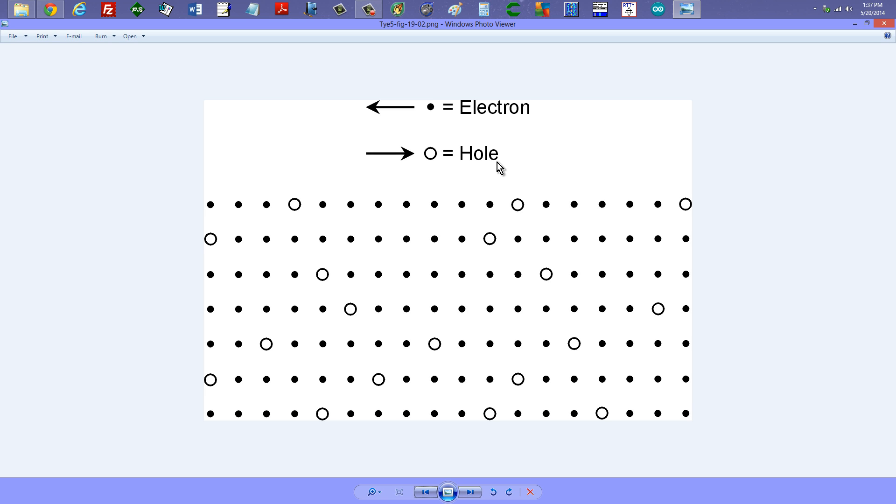You may ask, what on Earth is a hole? Just about all of us know what an electron is. It's a charge carrier that more or less orbits around the nucleus of an atom and has a negative electrical charge. A hole, on the other hand, is an atom that's kind of missing an electron, so it has a positive charge.